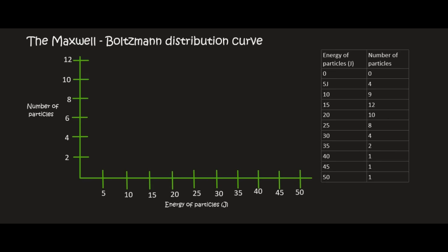Hello everyone. In this lesson, we're going to be talking about the Maxwell-Boltzmann distribution curve. Before we draw it out, the reason I've done it separated like this with a table is because many students have seen this Boltzmann curve but don't really understand the way it works. By drawing it out, you get a much better understanding of what it actually means. On the x-axis we've got energy of particles, and on the y-axis we've got number of particles.